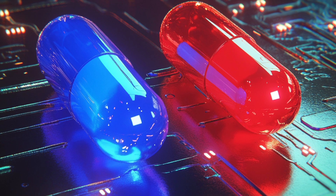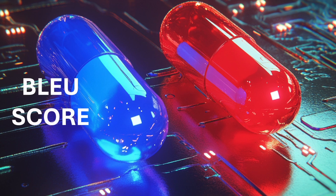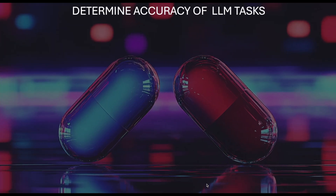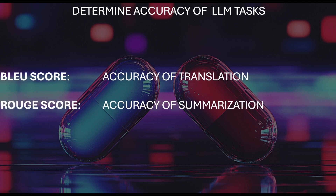Welcome to The Matrix. Today you do not have a choice but you have to take both the blue pill and the red pill. In this video I will explain the BLEU score and the ROUGE score, which are used to determine the accuracy of large language models. Nowadays large language models perform many natural language processing tasks such as translation and summarization, but how do you ensure that these models are accurate? This is where the BLEU score and the ROUGE score are useful — they help us objectively determine the quality of translation and summarization.